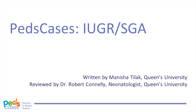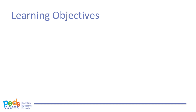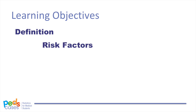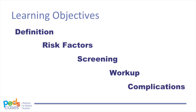Let's start by defining our learning objectives. After this Peds Cases podcast, the learner should be able to define intrauterine growth restriction and differentiate between this condition and babies who are small for gestational age; list maternal, fetal, and placental risk factors for IUGR; describe the appropriate screening and workup of expectant mothers for IUGR; describe the appropriate postnatal assessment and care of a fetus with IUGR; and list the short-term and long-term complications of IUGR.